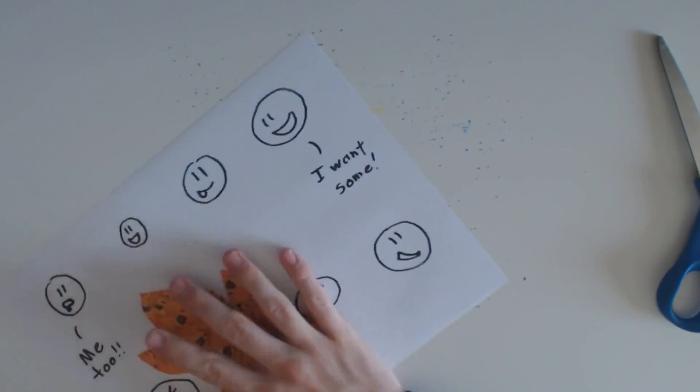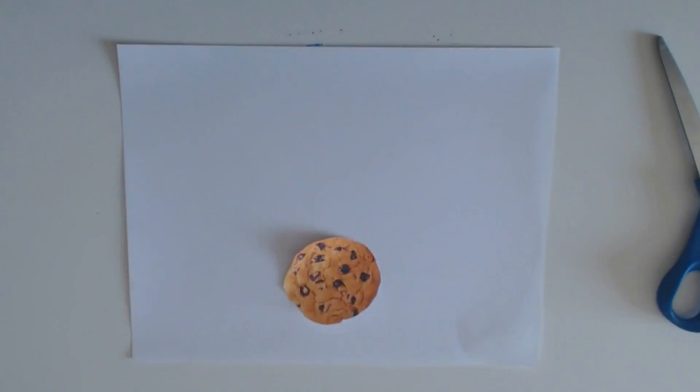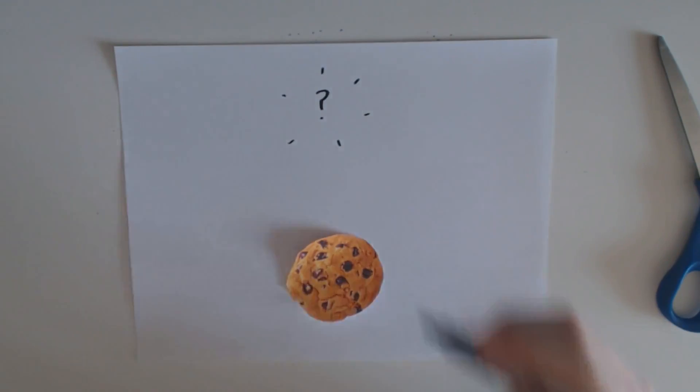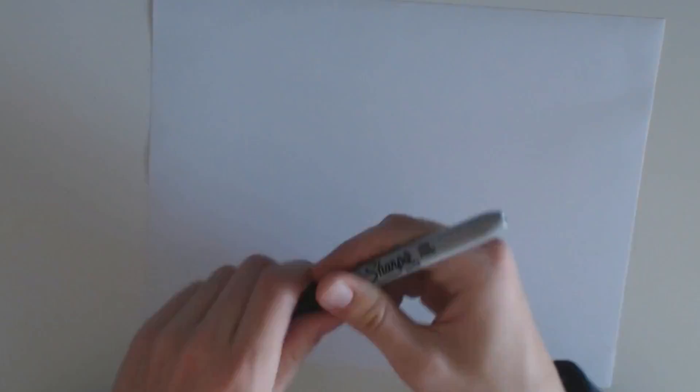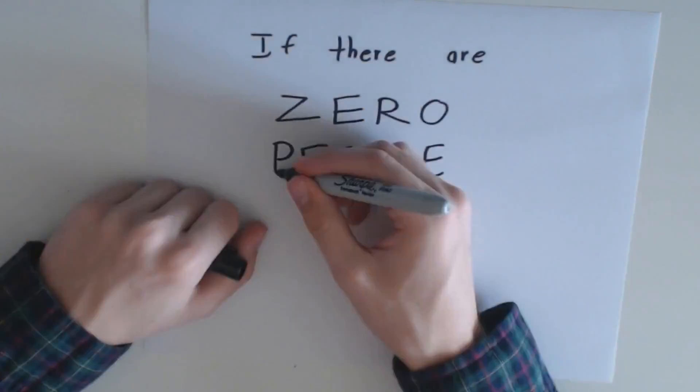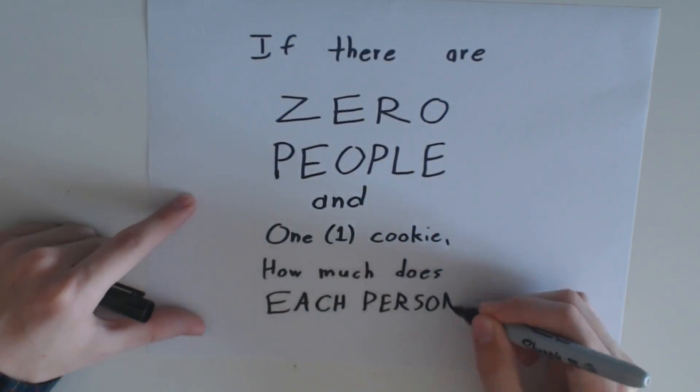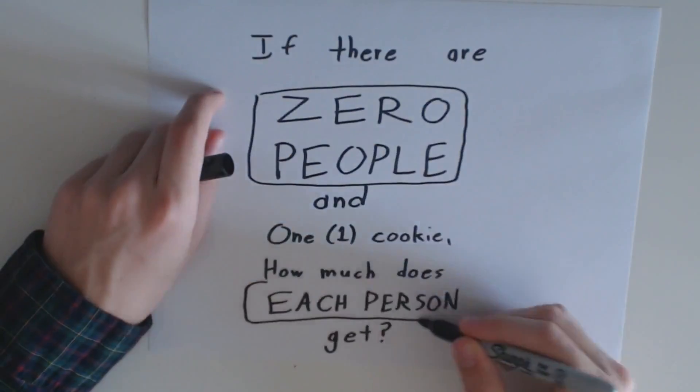Now what happens when we have zero people? How many does each person get? Now you might think the answer is zero, since nobody gets any cookies. But let's look at this question a little more carefully. If there are zero people and one cookie, how much does each person get?